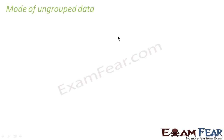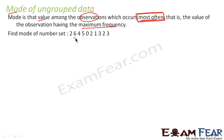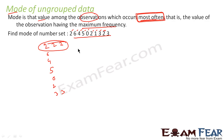Before we study mode of ungrouped data, let's focus on what is mode. Mode is nothing but a value among the observations which occurs most often — the one which has the maximum frequency is called the mode. For example, if we find the frequencies: 2, 6, 4, 5, 0, 1, 2, 1, 3, 2, 3 — we can see that 2 has the maximum frequency, occurring 3 times.